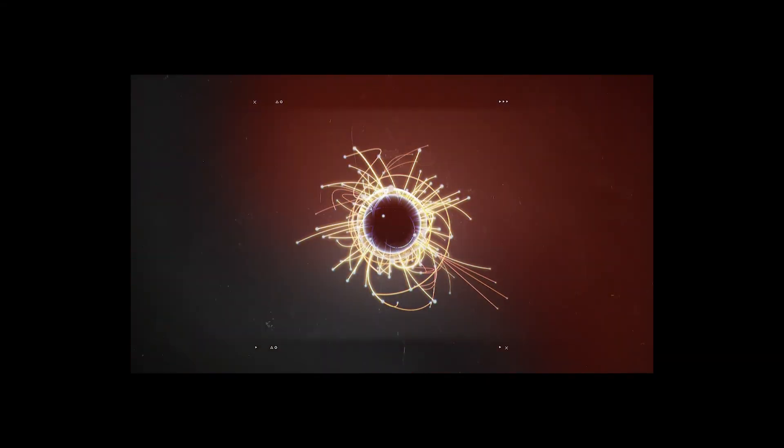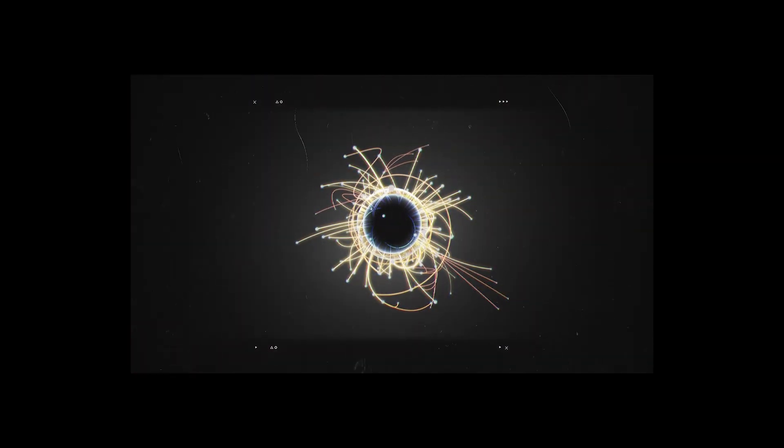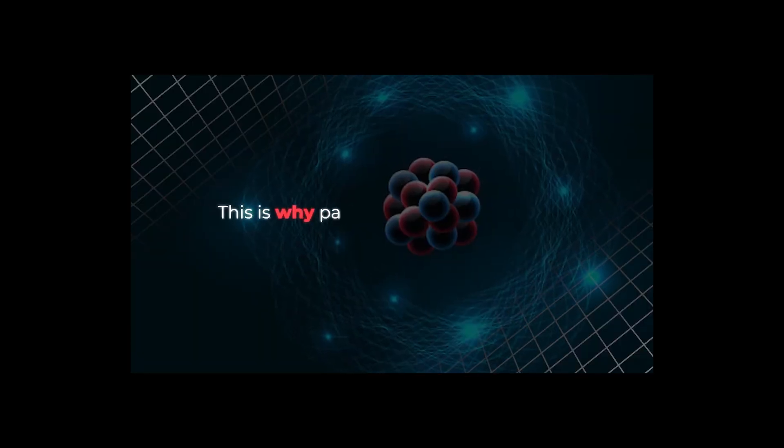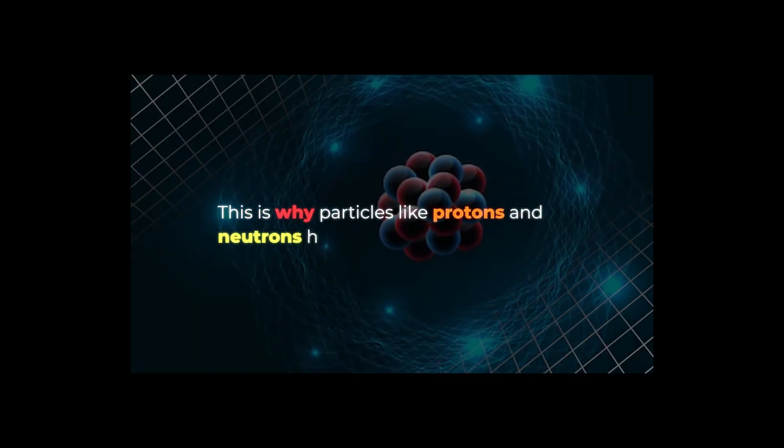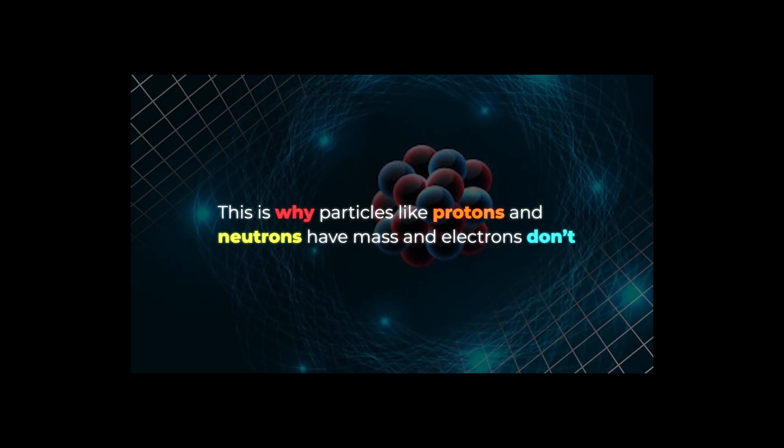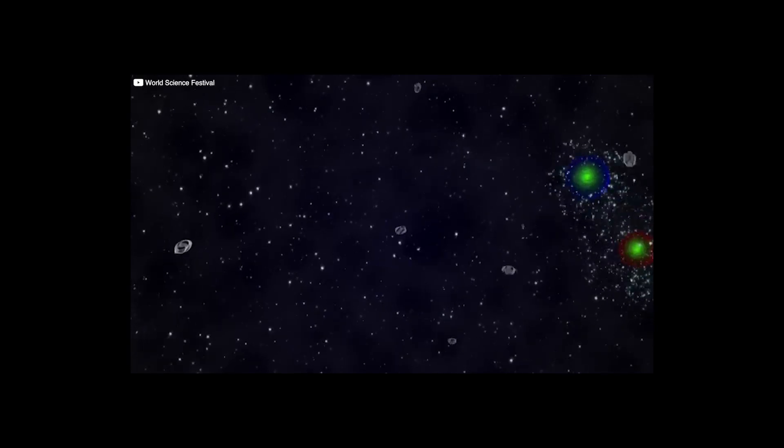As particles travel through it, they gain mass. The more they interact with the field, the heavier they become. This is why particles like protons and neutrons have mass and electrons don't. The Higgs field is the very thing that allows the universe to have structure. Without it, everything would just float around as massless particles.